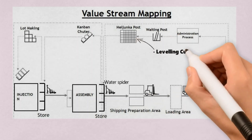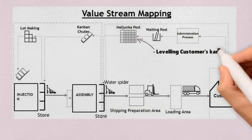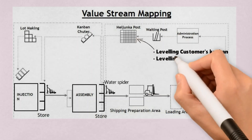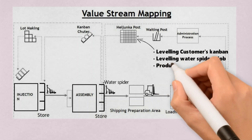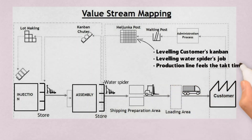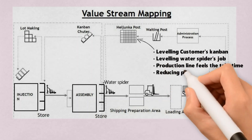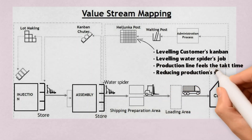The functions of HiJunka Post are: leveling customers' kanban, leveling the water spider's jobs, production can feel the takt time, and also reducing production store.